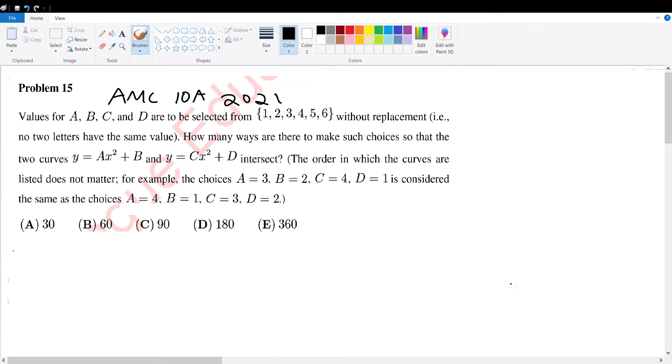AMC 10A 2021, problem 15. We have the following four variables a, b, c, d from a given range 1, 2, 3, 4, 5, 6, and we're trying to find the potential values of these so that the two curves will intersect. And we have a following condition for how each case is considered a unique case, but we're going to evaluate that later on in this problem.